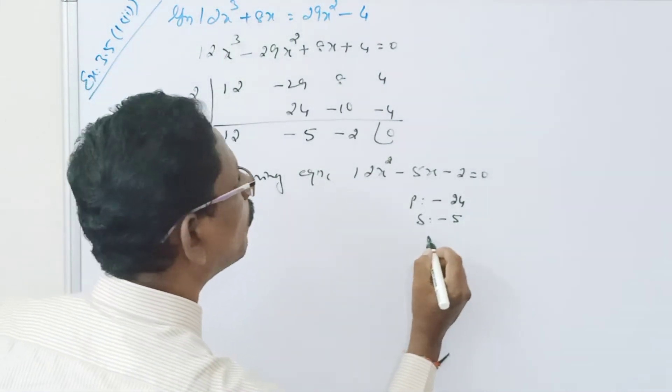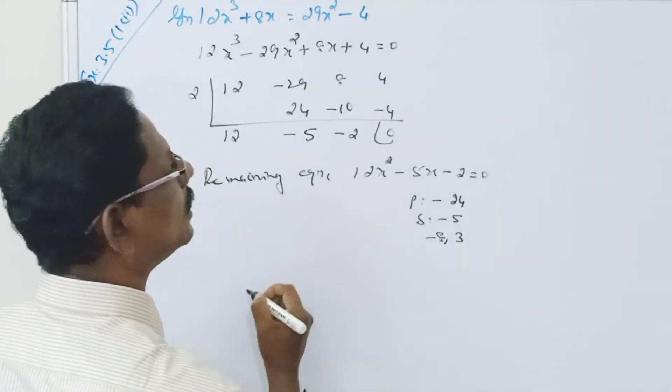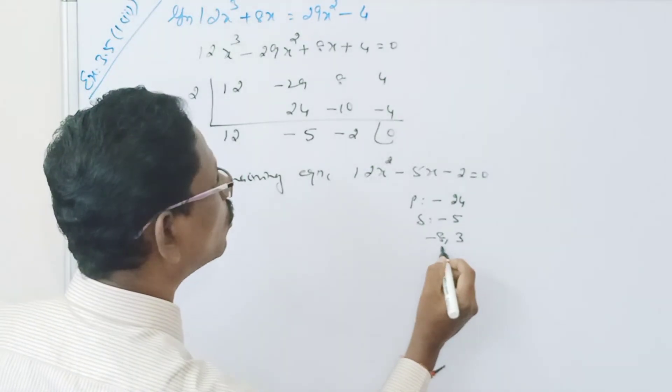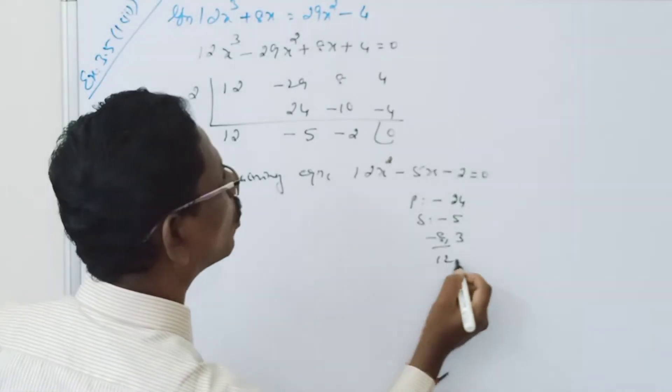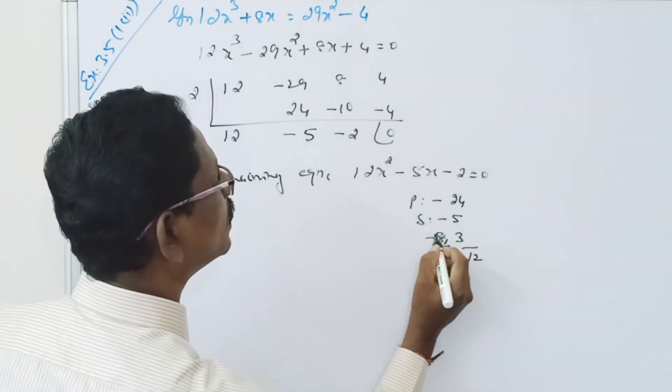So minus 8, 3. Minus 8, 3. So minus 8 by 12, 3 by 12. Here it is cancelled.